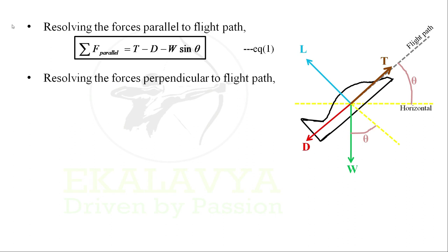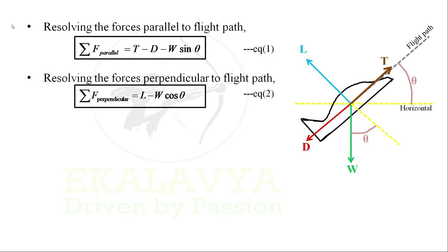Resolving the forces perpendicular to the flight path — considering forces perpendicular to the flight path as positive and forces in the downward direction as negative — we have lift L acting upwards. Weight W is inclined; resolving it perpendicular to the flight path gives W cos θ. Summation of forces perpendicular to the flight path equals L minus W cos θ. Let us denote this as Equation 2.